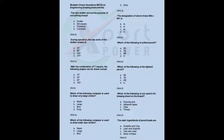During operation, the two arms of the drafter remain at: a) 45 degrees, b) 90 degrees, c) 180 degrees, d) 270 degrees. Answer: B. With the combination of T-square, the following angles can be drawn except: a) 15 degrees, b) 25 degrees, c) 45 degrees, d) 105 degrees. Answer: B.